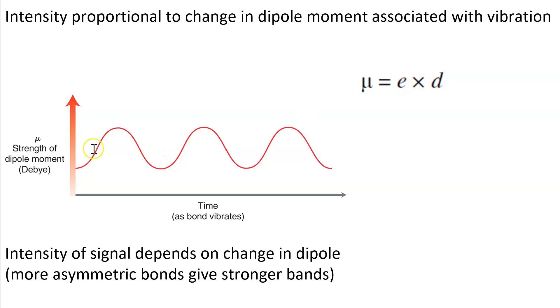So as a bond vibrates, when the distance is close the mu is small. When the distance is far away the mu gets greater. So the greater the charge separation e, the greater the magnitude of this vibration. So the more asymmetric the bond is, the stronger the band.